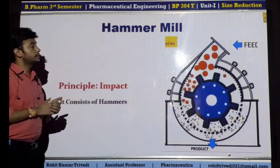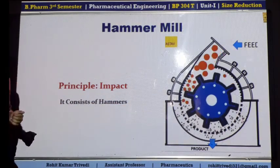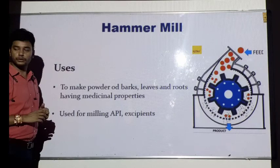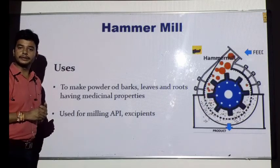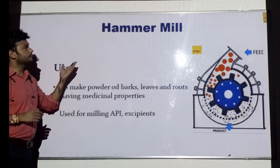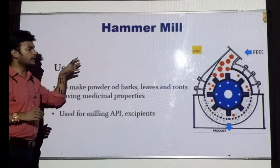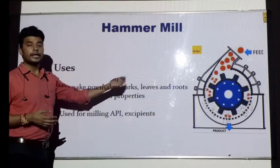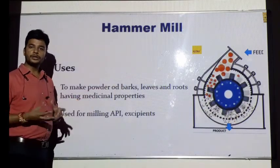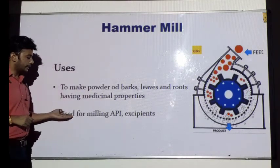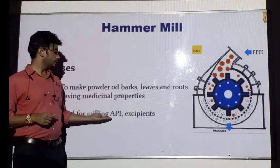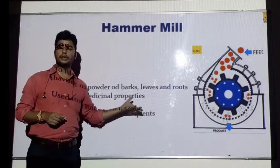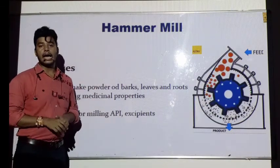Now let's discuss the uses of a hammer mill. Obviously it is a machinery used for the process of size reduction. The bark, leaves, and roots of a plant can also be reduced into smaller size using the hammer mill. And milling of the API — active pharmaceutical ingredient — and other excipients can also be reduced in size by using the hammer mill.